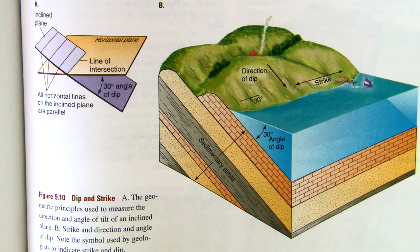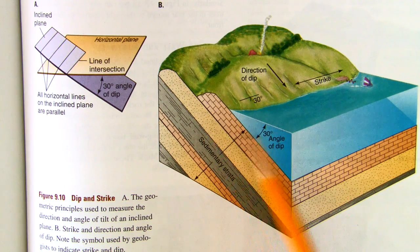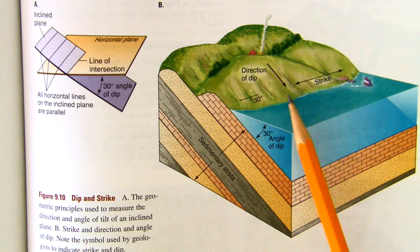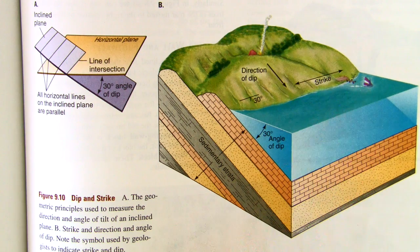Where these two connect, the layers of rock at an angle and the horizontal lake, is what we call the strike. That is the strike. That's where it's striking.